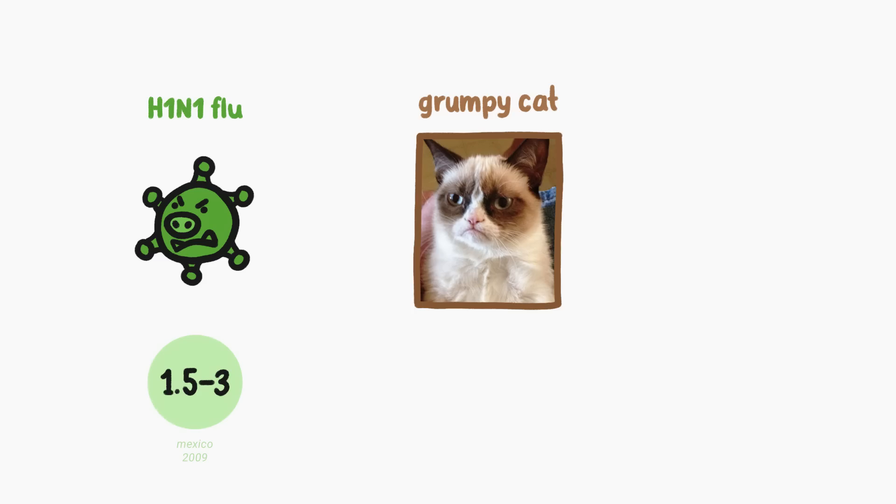And if you do the same thing for grumpy cat's google search data, we can estimate that it had a reproduction number of 7.3, which is pretty viral, but others are even more viral.